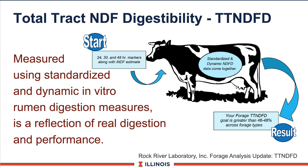The next one comes from Rock River Lab and the University of Wisconsin. It's known as TTNDFD, which stands for Total Track NDF Digestibility. It is a standard way to look at both the rates and the levels of digestibility — very powerful in models. It has a totally different number compared to other systems, so be very careful which system you are using when evaluating your forages. The magic number is 48.